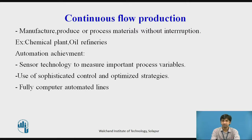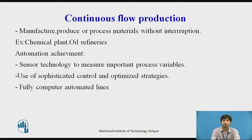Continuous flow production basically means manufacturing, producing, or processing materials without interruption. Examples include chemical plants and oil refineries. Automation is achieved through the use of sensor technology to measure important process variables, sophisticated control and optimized strategies, and fully computer-automated lines.